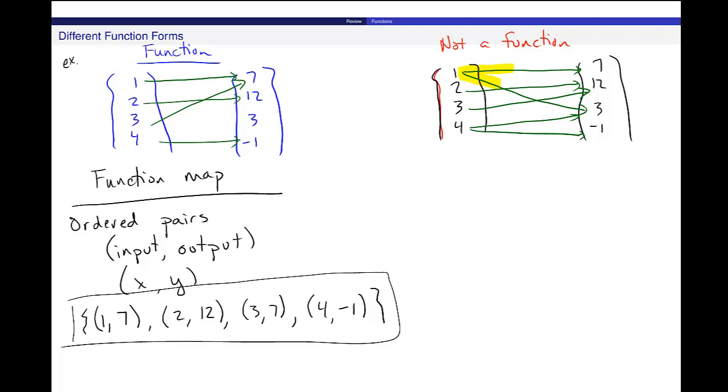Now, you can list relations as ordered pairs as well. Over here, I could list this one. 1, 7. 1, 12. 2, 12. 3 is going to 12. 4 to 3. And 4 to negative 1. And you can identify this behavior that's problematic here. Because, again, I have the same input parameter. 1 and 1 in two different ordered pairs. And it's going to two different output parameters there.